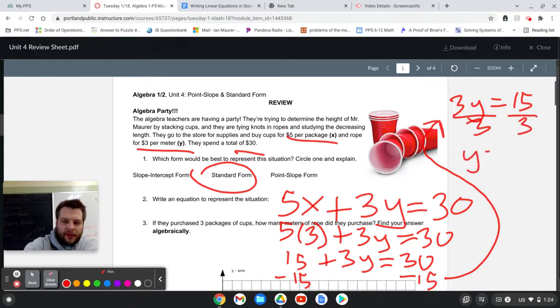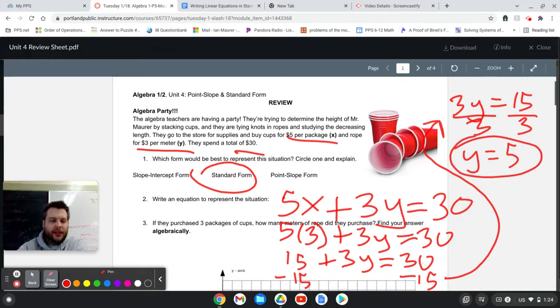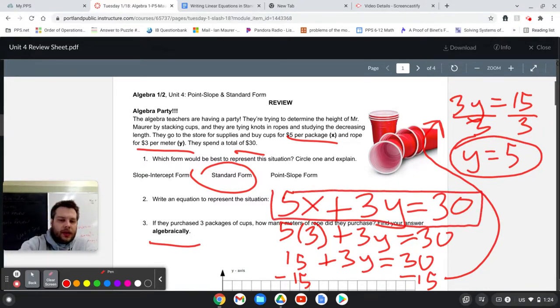Many of you could have probably figured out in your head that if you buy three packages of cups, that costs $15. So you got 15 bucks left over and 15 bucks left over divided by $3 per meter is five meters of rope. But when it asks you to find your answer algebraically, all you're doing is practicing writing down that thought process there. So here's the answer to question two. And then right below that is when I did question three.